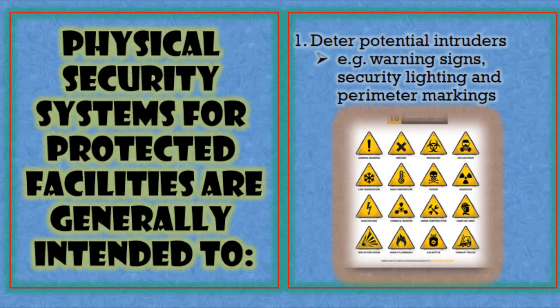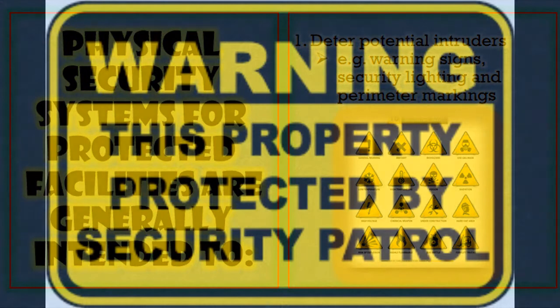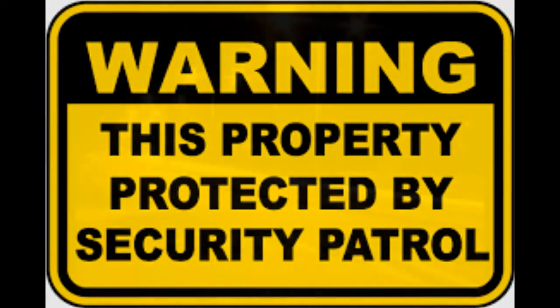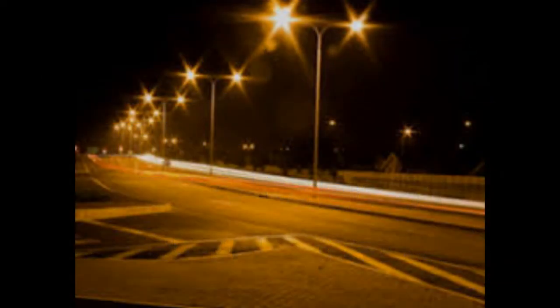Physical security systems for protected facilities are generally intended to do the following. First, to deter potential intruders — examples include warning signs, security lighting, and perimeter markings, all contributing to the psychological deterrent we mentioned.